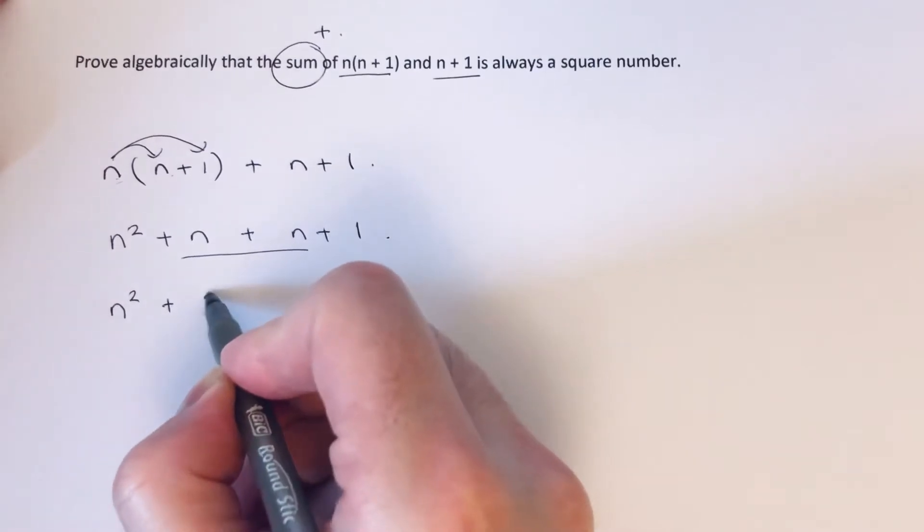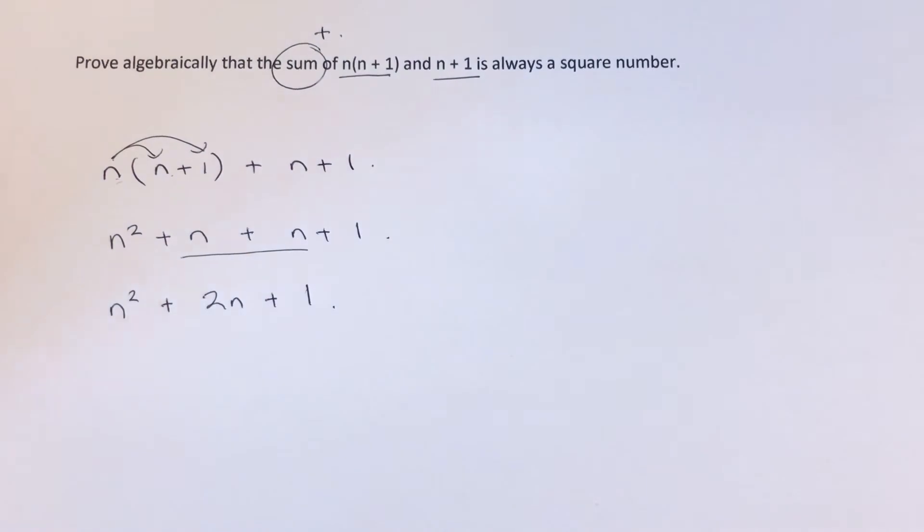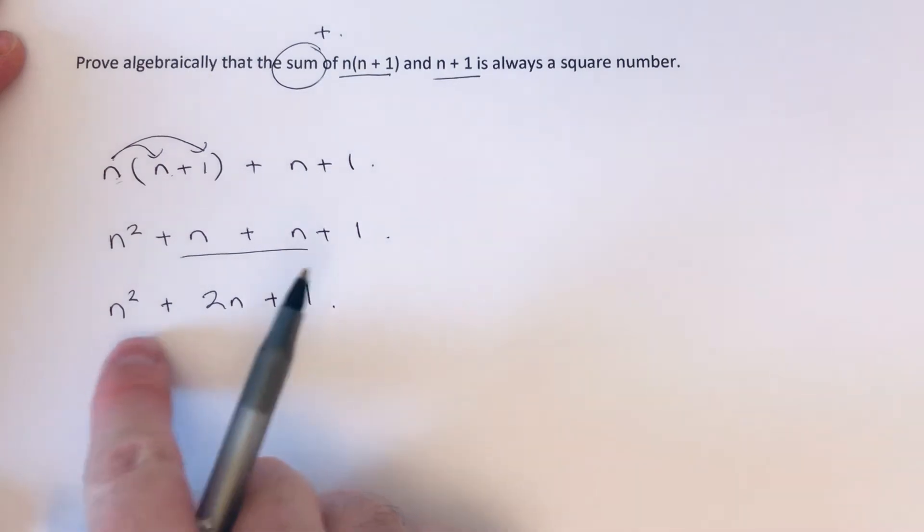Now we've got to try and prove this is a square number. So a square number is something multiplied by itself. Now what we have to do is put this into a double bracket.